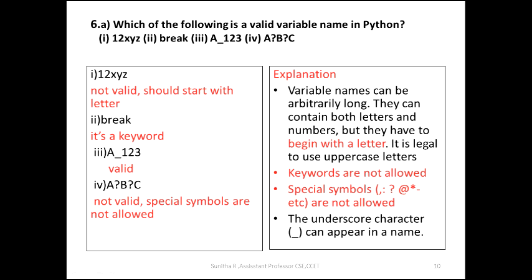Let's evaluate the options. 12xyz is not valid because a variable name should start with a letter, not a number. Break is a keyword which is used to exit from a loop, so it is not valid. Underscore A underscore 123 is valid - it starts with a letter, the underscore. A78 question mark C is not valid because question mark is a special symbol.